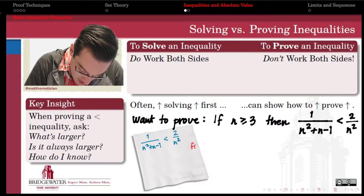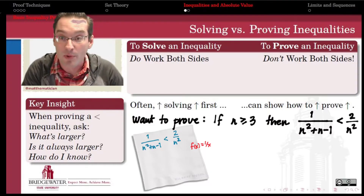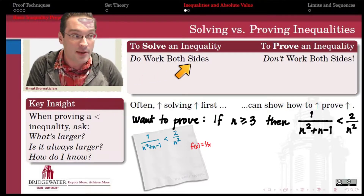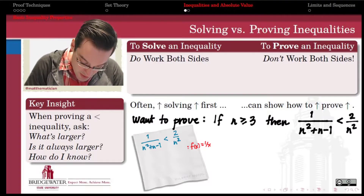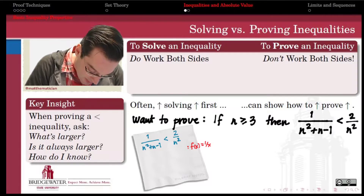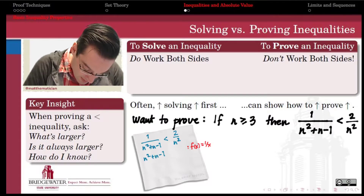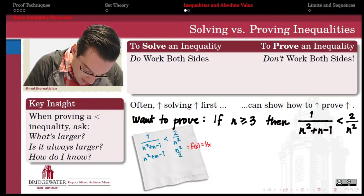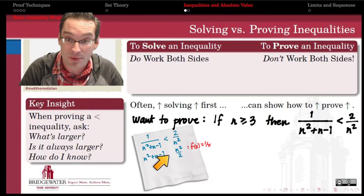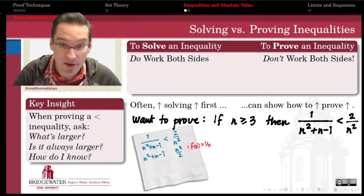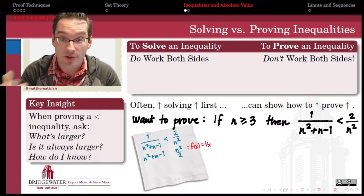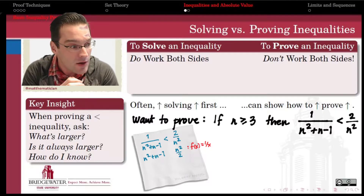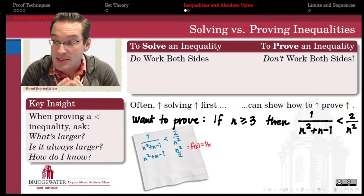I'm applying the function f(x) = 1/x to both sides of this inequality. Working on both sides of an inequality is something we do when solving. If I apply that function to both sides, it's going to turn both of my fractions upside down. I'm going to get n squared plus n minus 1 on the left side, and n squared divided by 2 on the right-hand side. I didn't write any inequality symbol in between those two yet, and here's the first key point: when you're solving an inequality, we should be thinking about what function we applied to both sides. Here the function we applied was the reciprocal function, f(x) = 1/x. The problem is that the reciprocal function is a decreasing function.